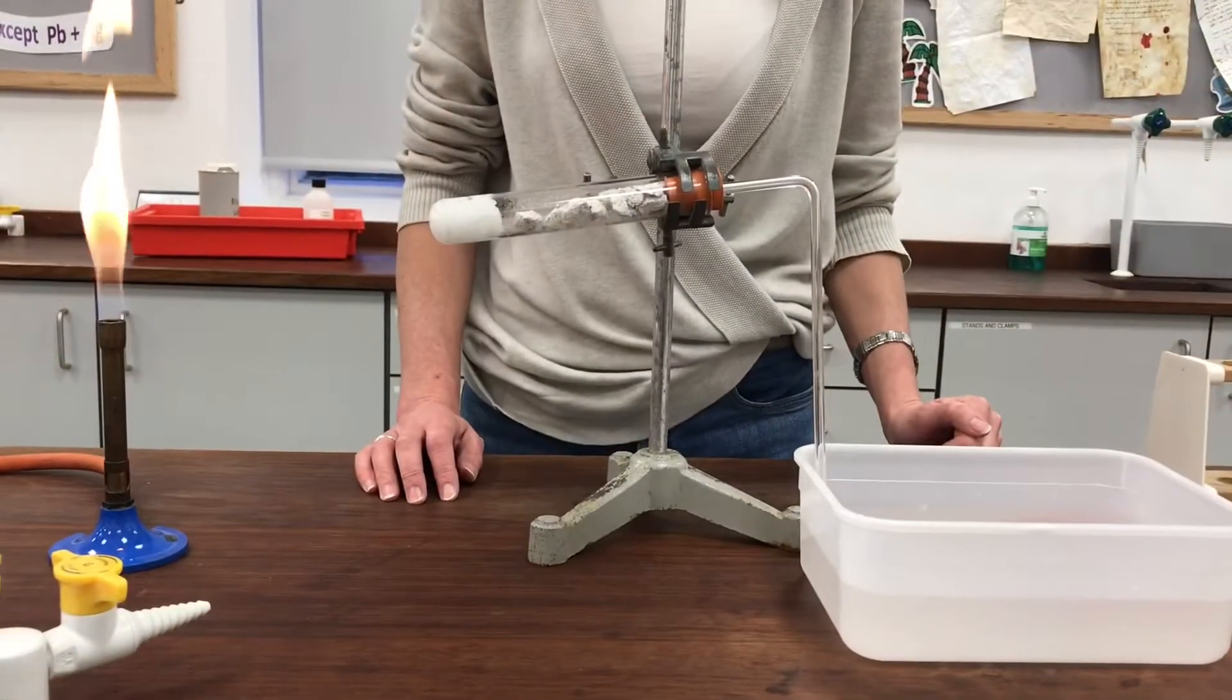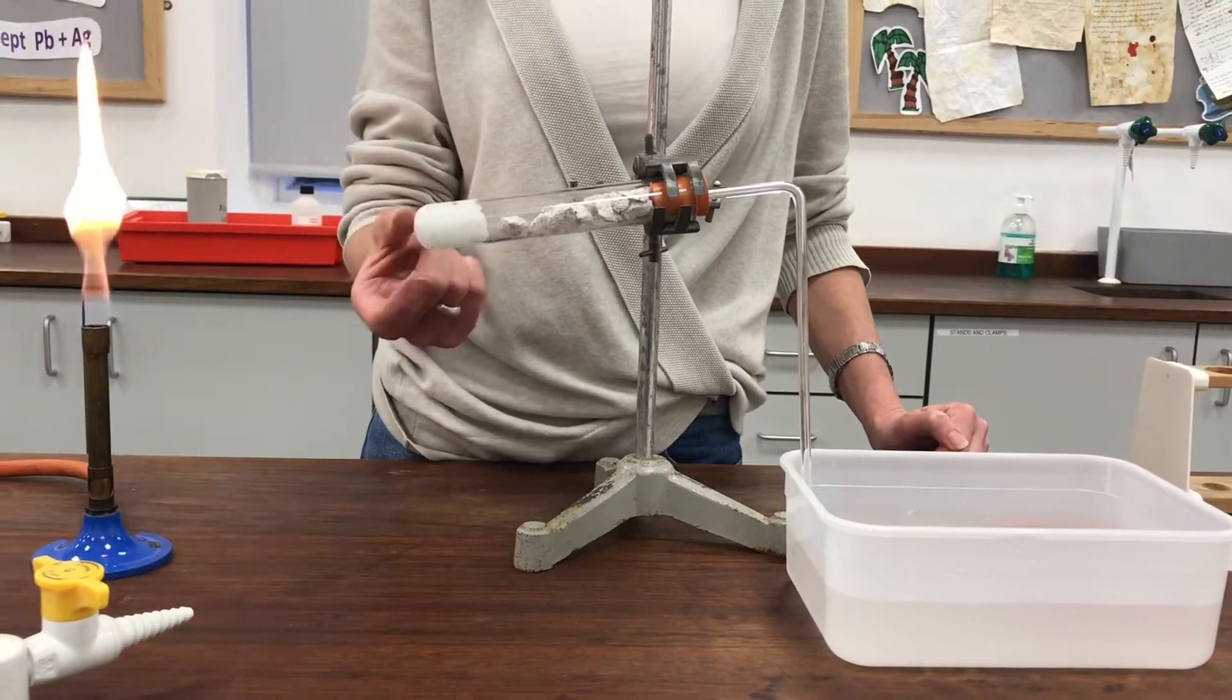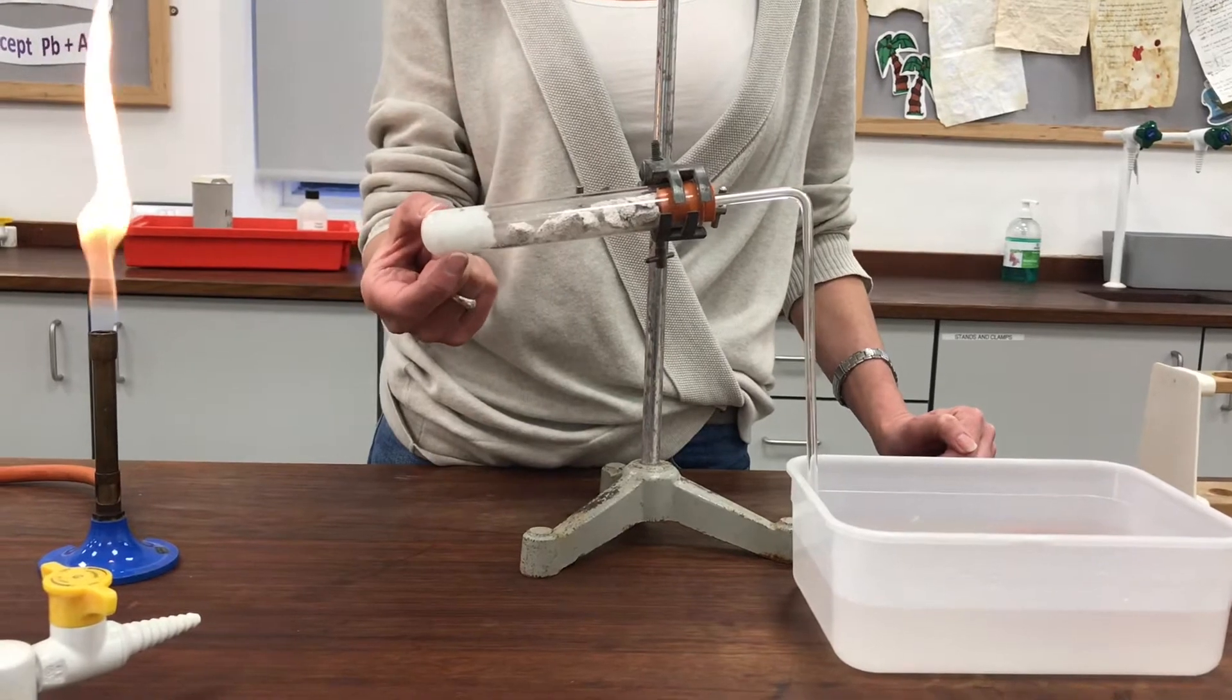This is the apparatus that we're going to be using for the experiment. I've got some mineral wool here at the end of my boiling tube and I've soaked it with paraffin, so that's my long alkane molecule.